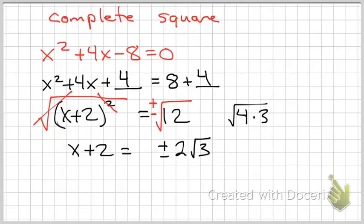Now what do I do to get X by itself? Subtract 2. Subtract 2 from both sides. And so now, I end up with X equals negative 2 plus and minus 2 root 3.